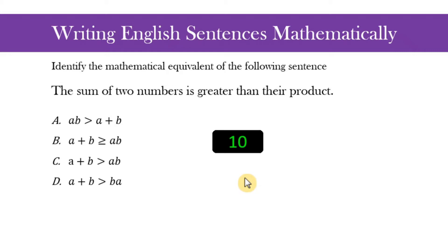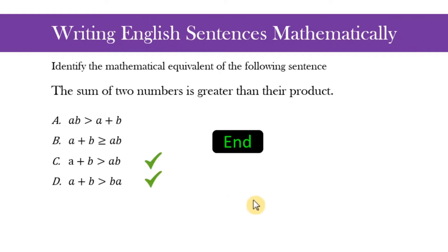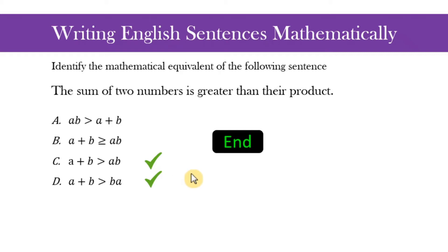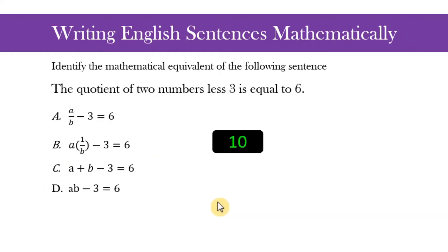Another item: the sum of two numbers is greater than their product. Time's up — there are two correct answers. If we let a and b be the variables representing the two numbers, then a plus b is greater than their product. Since multiplication is commutative — meaning interchanging the factors does not change the product — a times b is the same as b times a. Therefore both C and D are correct answers.